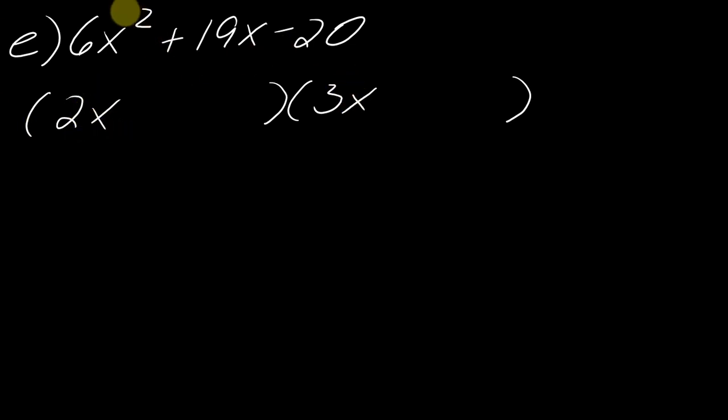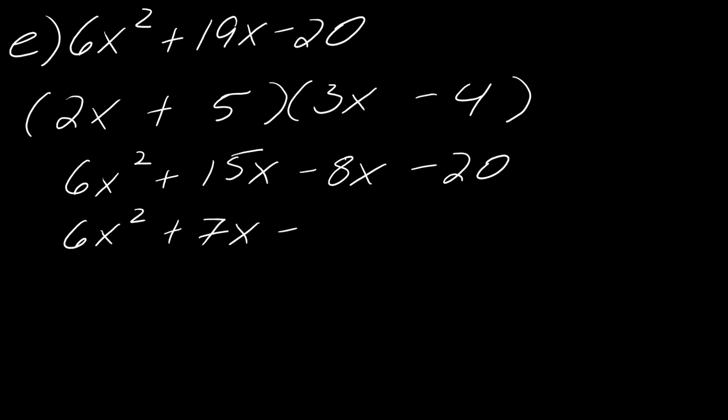So 2x and 3x will give me 6x squared. I'm just going to try it and see what happens. So next. So now I've got negative 20. So there's a lot of different ways to make 20, or negative 20. But I'm going to need a positive and a negative in that. So I don't know. Let's just do how about plus 5 minus 4. So 5 times negative 4 will give me negative 20. Will that get me the middle term that I need? Well, let's see. So I multiply this back together, I get 6x squared, 15x minus 8x, and then minus 20. So that gives me 6x squared plus 7x minus 20.